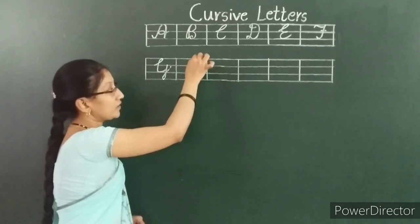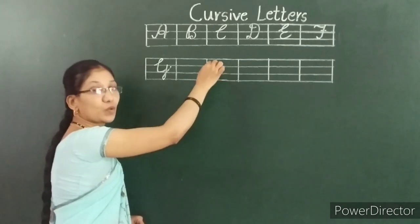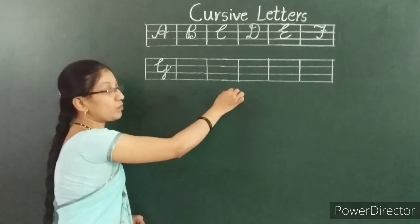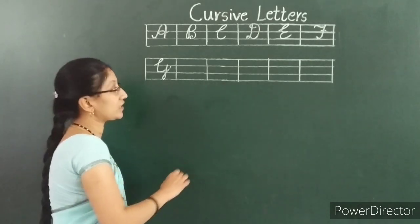Start, move down. Again, move a little, come down. Again, big loop and leave it free. This is G.